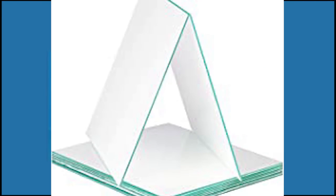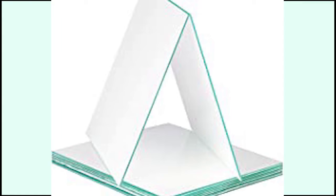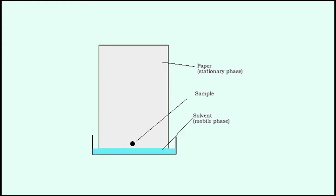In TLC, the stationary phase is a thin absorbent material layer, usually silica gel or aluminum oxide, coated on an inert plate surface, typically glass, plastic or aluminum. The sample is spotted onto one end of the TLC plate and placed vertically into a closed chamber with an organic solvent mobile phase.